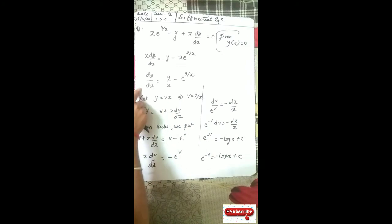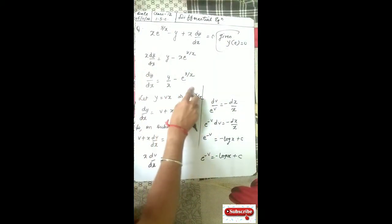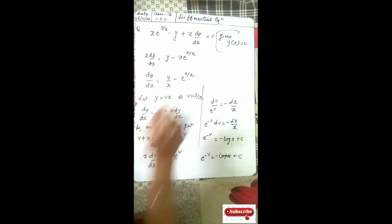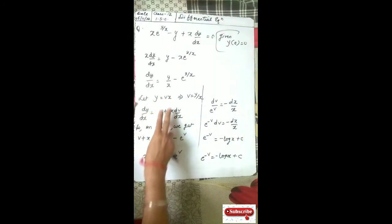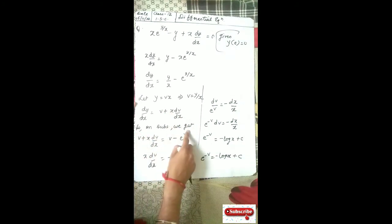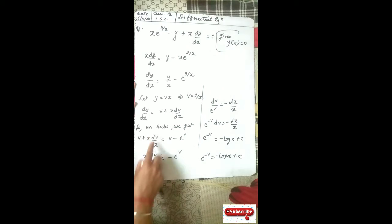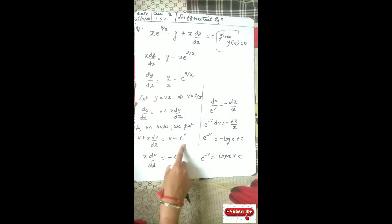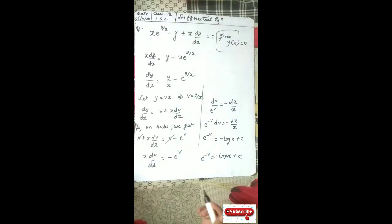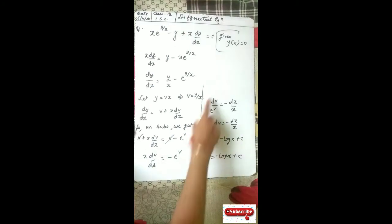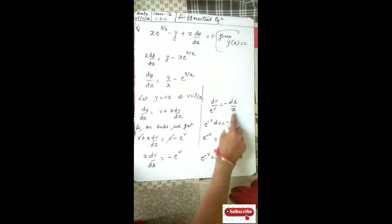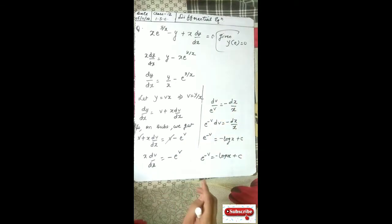This is not in the proper form, so rearrange to find dy/dx. Let y equal to vx, so v equals y/x. Differentiate both sides to get dy/dx equal to v plus x dv/dx. On substitution, v plus x dv/dx equals v minus e^v. The v terms cancel, leaving x dv/dx equal to minus e^v.